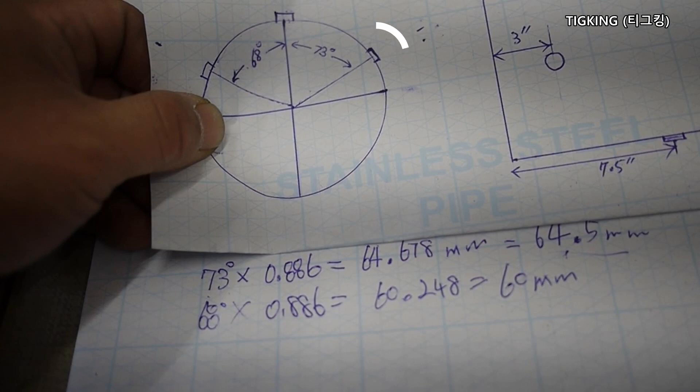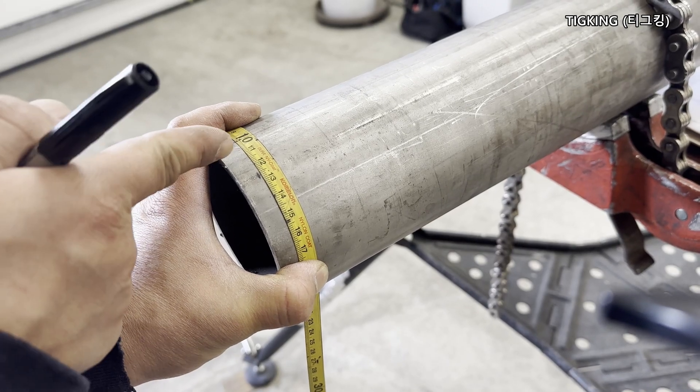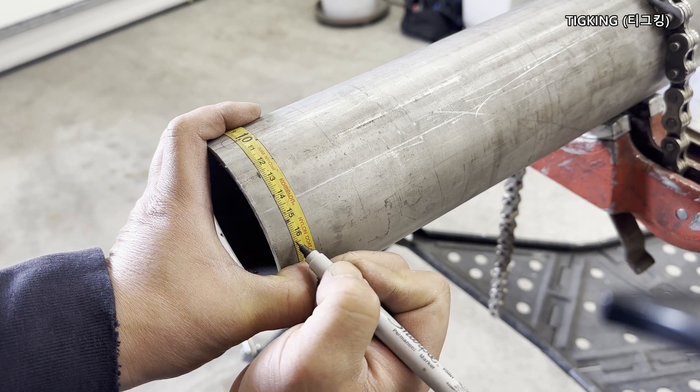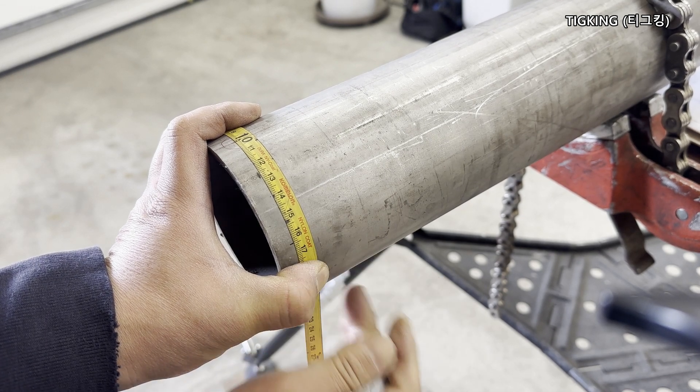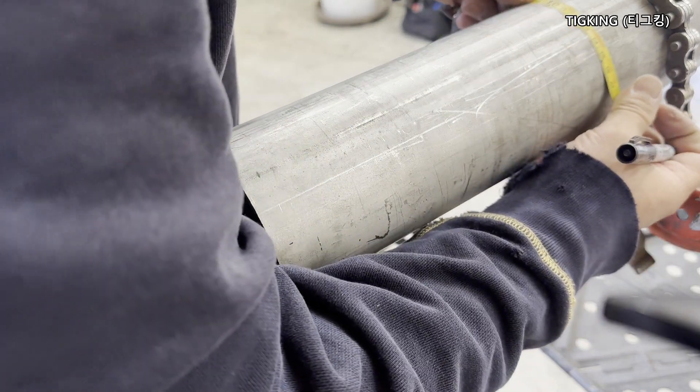The second one is 73 degrees apart from the center line. The third one is 68 degrees apart. 73 multiplied by 0.886 is 64.5 mm. 68 multiplied by 0.886 is 60 mm. Mark 64.5 mm for 73 degrees and draw a line connecting two marks.